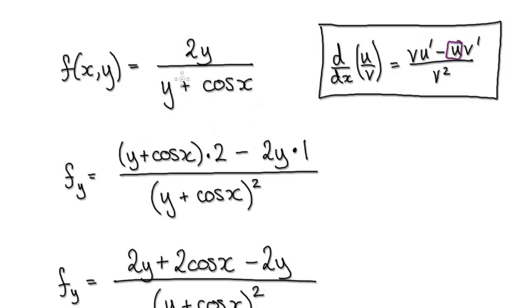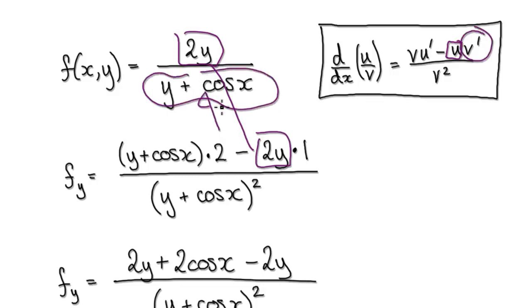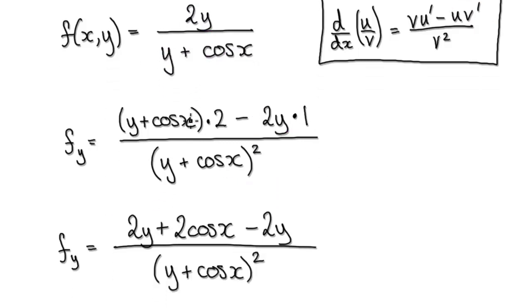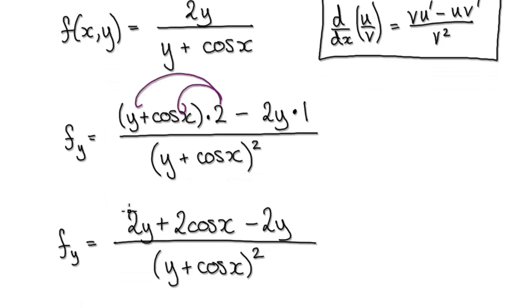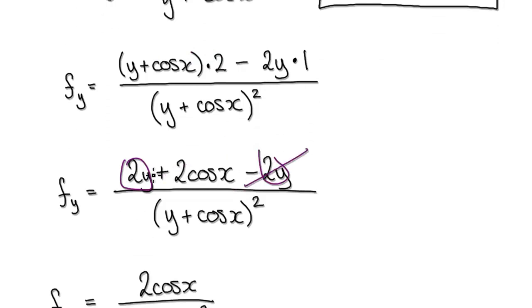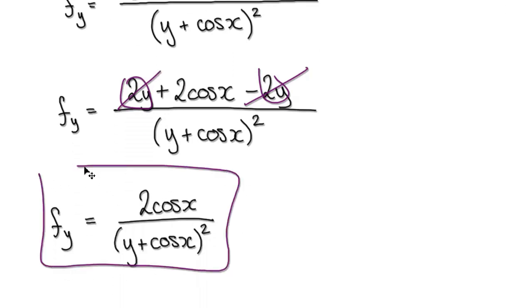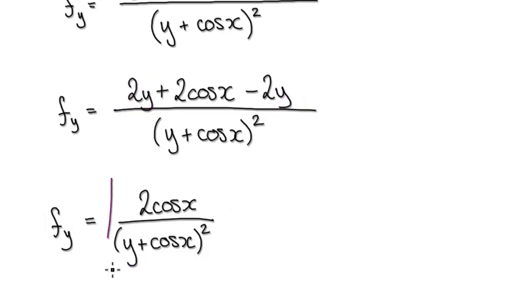Leave the U alone and differentiate the bottom. When you differentiate with respect to y, you only care about the y term — the rest is just a constant. Differentiating y gives one. Now tidy this up: multiply this out, and these two terms will cancel each other out, giving you the final partial derivative with respect to y.